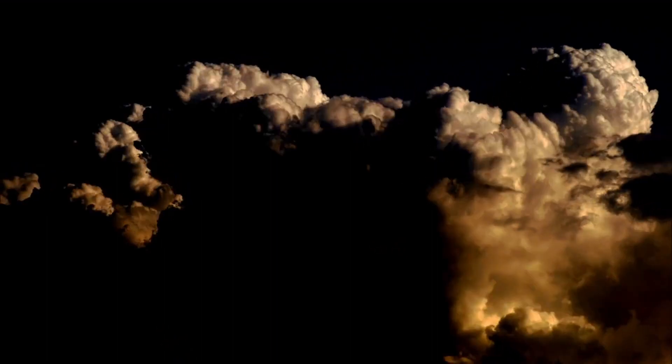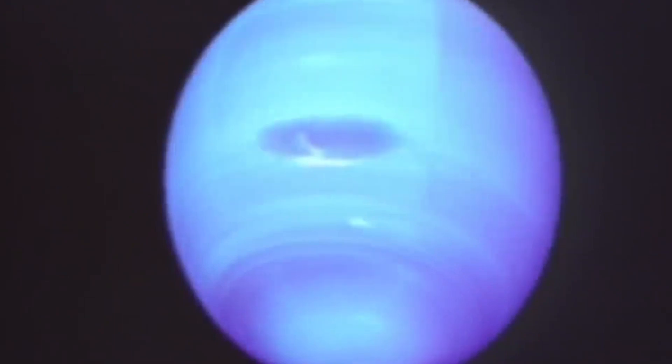The winds on Neptune are thought to be caused by the planet's rapid rotation and its strong internal heat source. The heat source drives convection currents in the atmosphere, which creates strong winds.